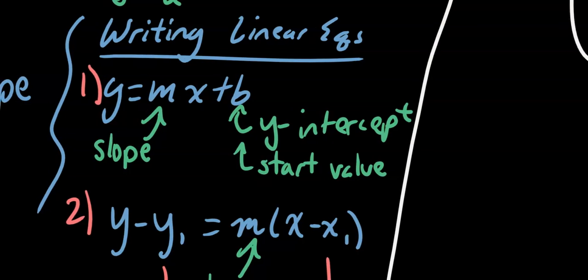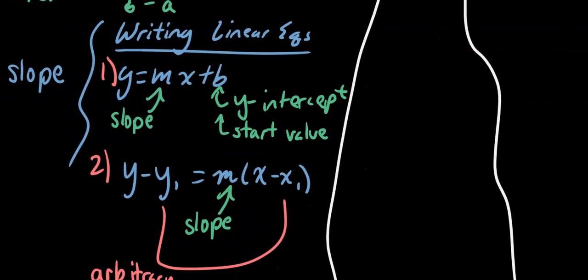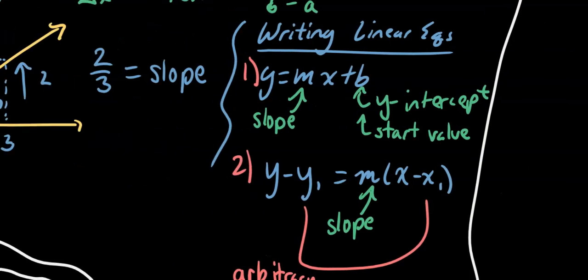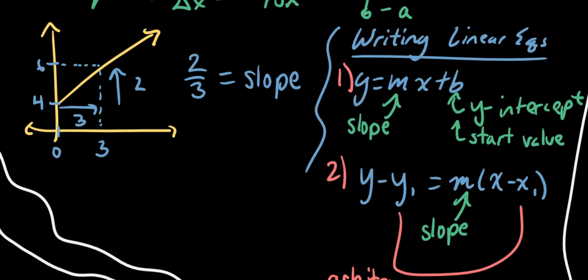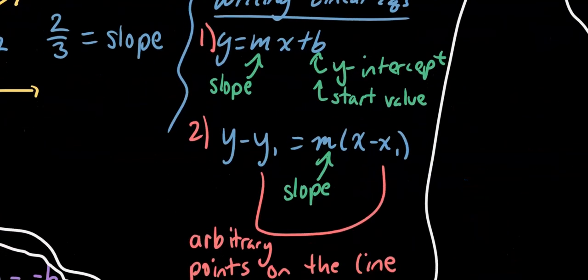When we see a linear equation in the form y equals mx plus b, m is the slope and b is the y-intercept, or it might be the starting value in a word problem. Point-slope form uses the same m for slope but includes some sort of random point on the line. Taking the point (3, 6), we would get y minus 6 equals 2/3 times (x minus 3).